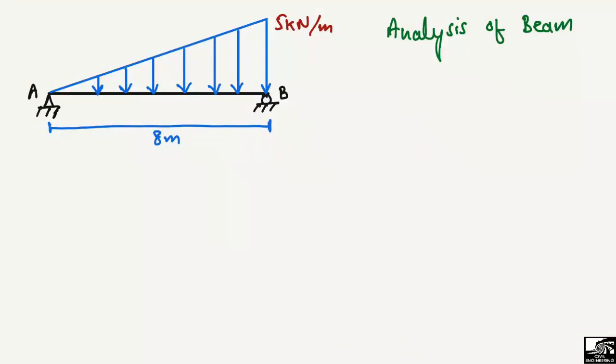Welcome back to the civil engineering YouTube channel. Today we are going to do the analysis of a simply supported beam. The beam length is 8 meters and there is a uniformly varying load of 5 kN per meter — a triangular load acting on this simply supported beam, where we have a hinge support on one end and a roller support on the other. We have to find the support reactions and analyze this beam.